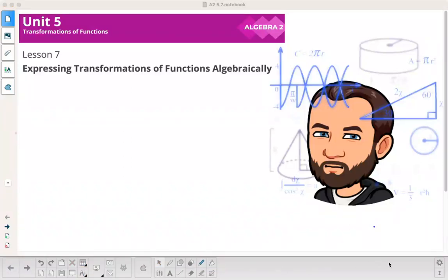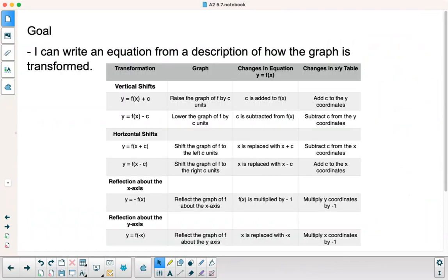Algebra 2, Illustrated Math, Unit 5, Lesson 7, is called Expressing Transformations of Functions Algebraically. Our goal today is I can write an equation from a description of how the graph is transformed.